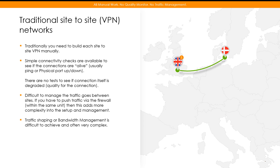There is actually no test to check the quality of the line — whether it's degraded, whether it's losing packets. Although you could use ping, many devices simply give a yes it replied or no it didn't. It is extremely difficult to manage the traffic that goes between these sites, especially if you want to push it via a firewall to start blocking traffic. This makes traffic shaping or managing any complexity to improve user experience essentially impossible.